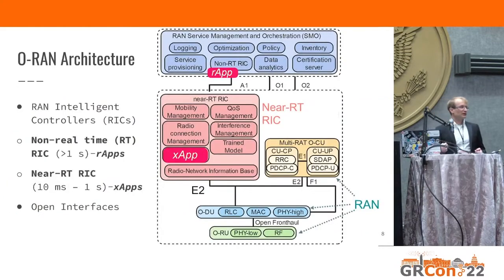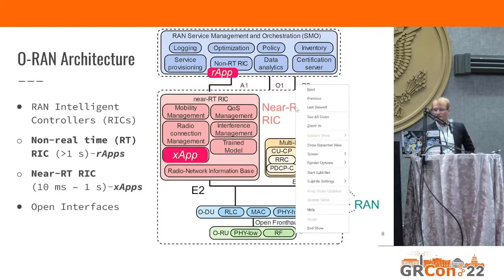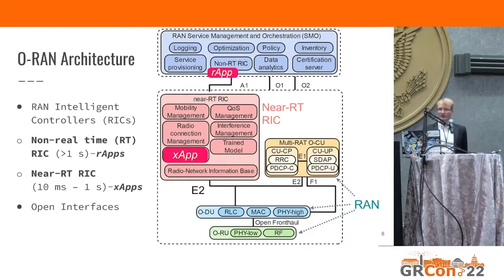Beyond RAN disaggregation, what does ORAN offer? ORAN leverages the 3GPP protocols but adds new features. The big features are the RAN intelligent controllers, or RICs. There are two of them. One is called the non-real-time RIC, which is in the service management orchestration part. It operates on data processed slowly, with feedback given at one second or above. The non-real-time RIC features R-apps — microservices that implement control algorithms to manage and optimize the network at slow timescales.